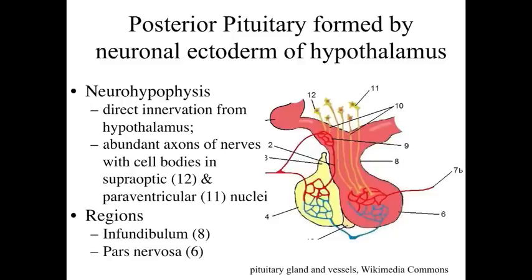The posterior pituitary is an extension of the brain — the neural hypophysis is neural in origin. We have a direct innervation from the cells within the hypothalamus. Cell bodies sitting within either the supraoptic or paraventricular nuclei within the hypothalamus have their axons — their cell processes — extending all the way down through the infundibulum into the pars nervosa, where they release their secretory product. If we look in the posterior pituitary, we won't see the secretory cell bodies — all we see are the axons and where they're releasing product, because the cell bodies are sitting up within the hypothalamus.